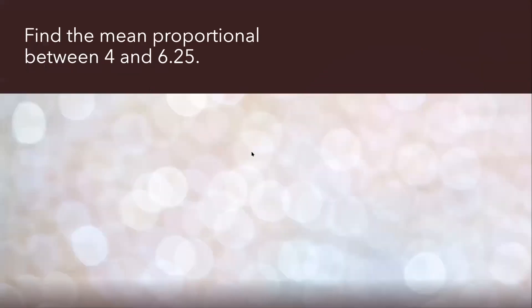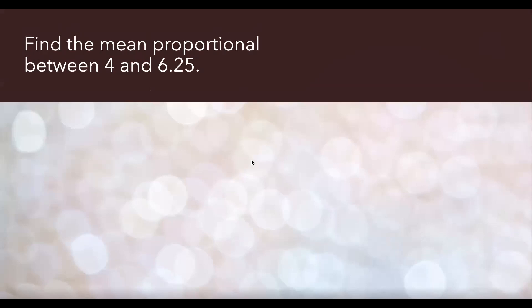Then next, we have a small question here. This question says find the mean proportion between 4 and 6.25. We've talked about proportion, but he has only given us two terms. So how do we find the proportion? Let's try to understand this. In such questions we always go with the format b squared equals to ac.